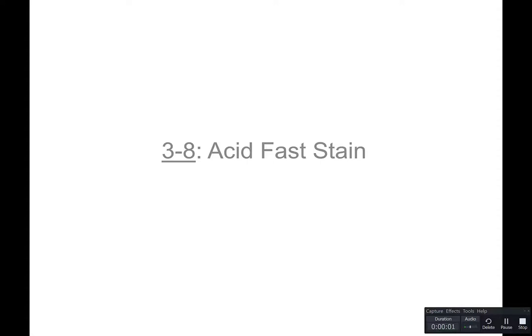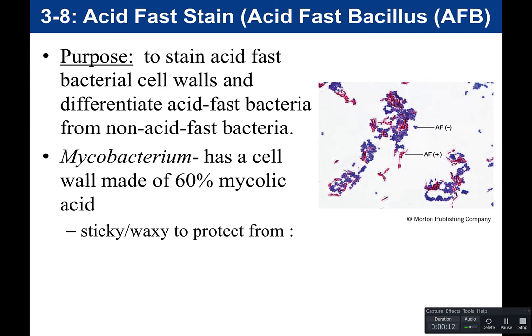In this activity, we're going to look at an acid-fast stain — this is activity 3-8. The purpose of the acid-fast stain is to stain acid-fast bacterial cell walls and differentiate acid-fast bacteria from non-acid-fast bacteria. This is another example of a differential stain.